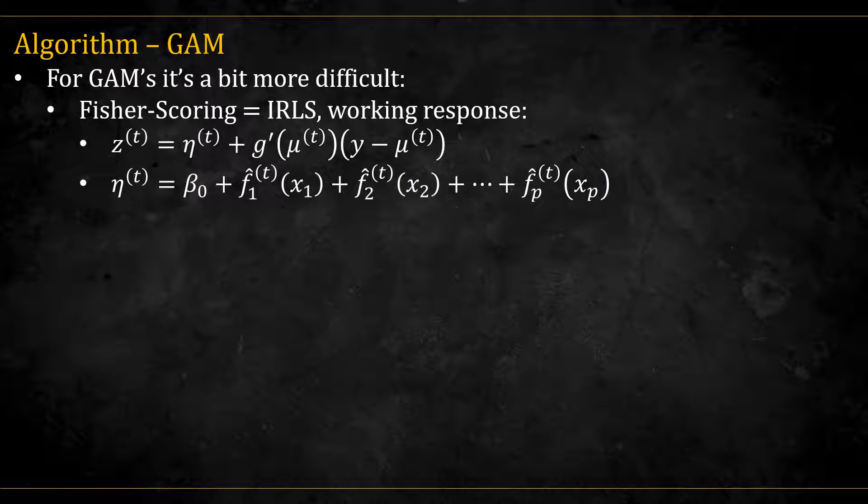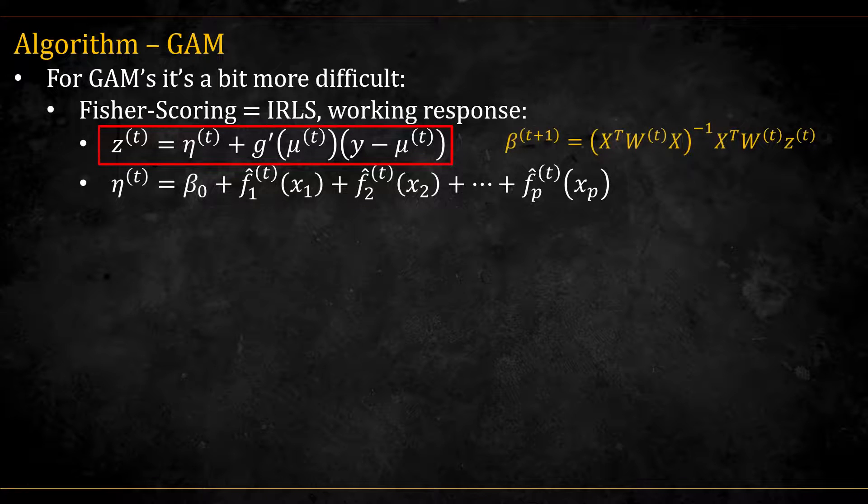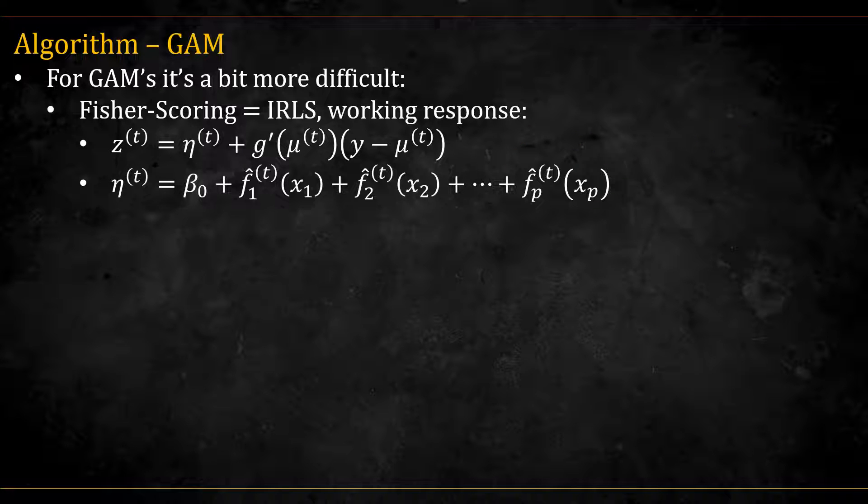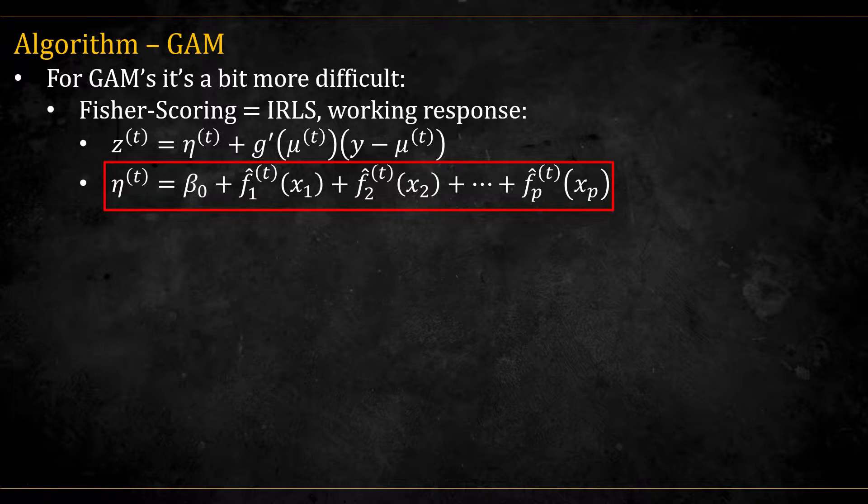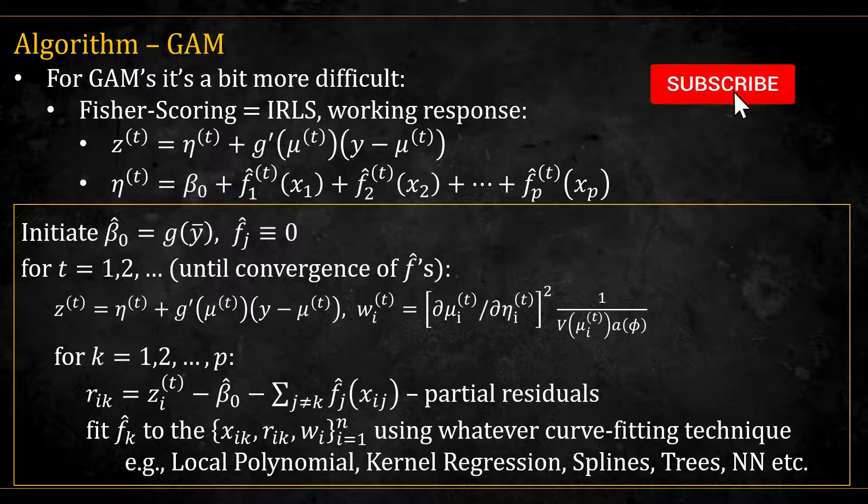For GAMs, it's a bit more complicated. Remember that the GLM fitting algorithm, Fisher-scoring, can be seen as doing iterated re-weighted least squares, or IRLS, on the working response, defined as this. So each iteration of Fisher-scoring in GLMs is actually fitting at least squares on these z's. But we are now in the realm of GAMs. The etas are the linear predictor, which we said in GAMs are now modeled like this.